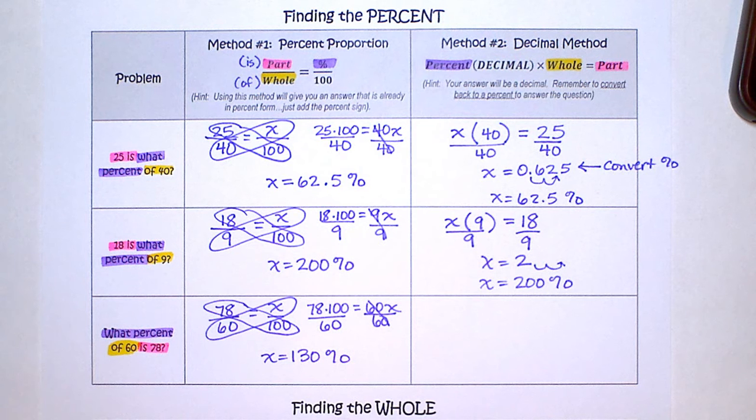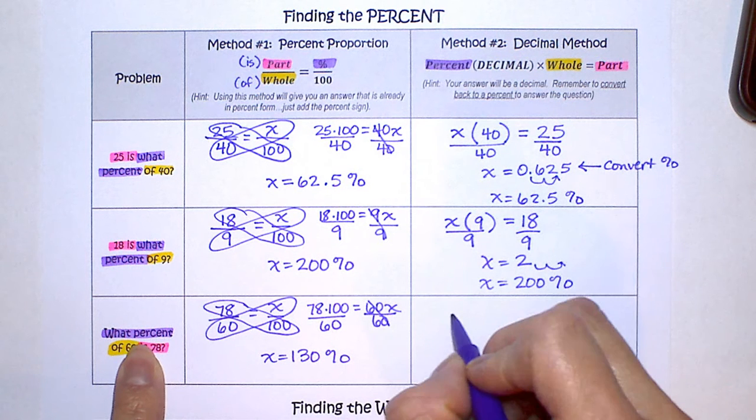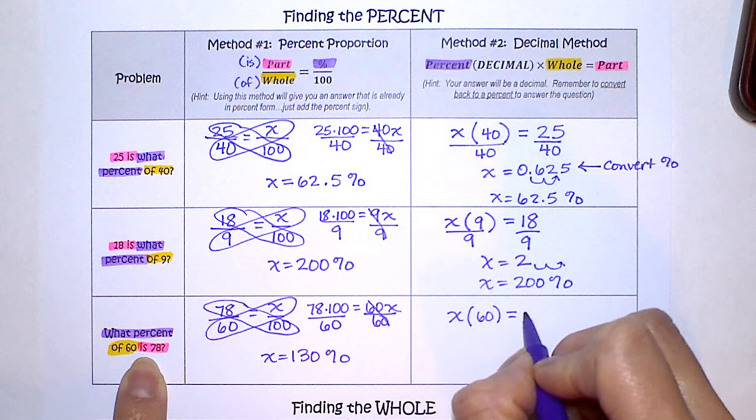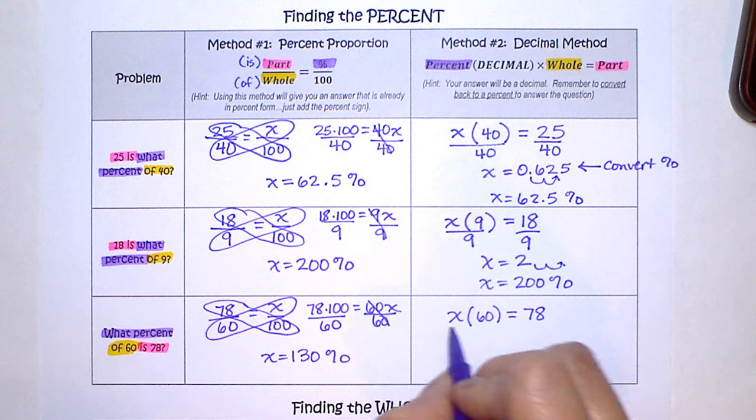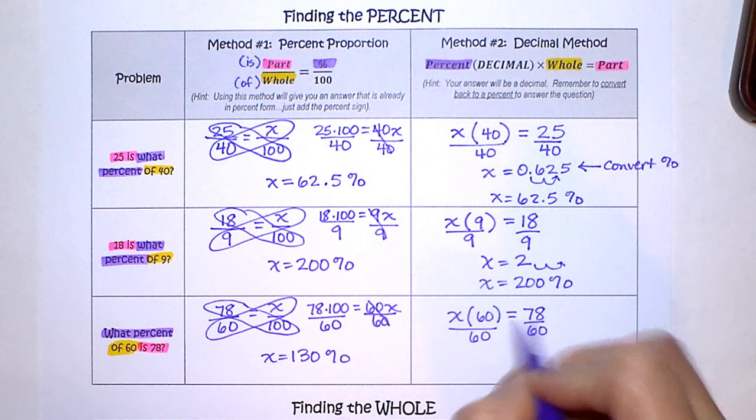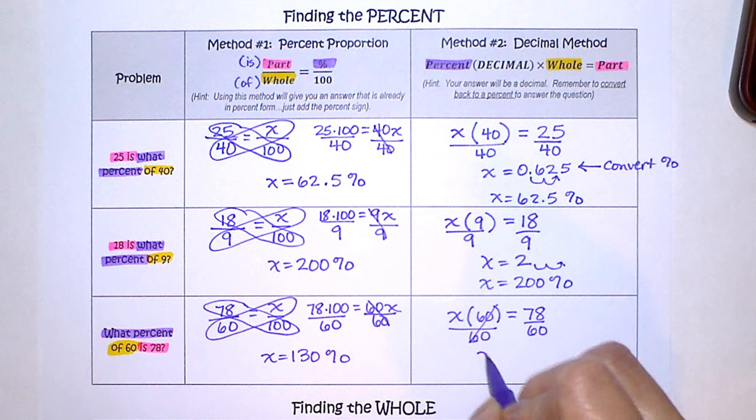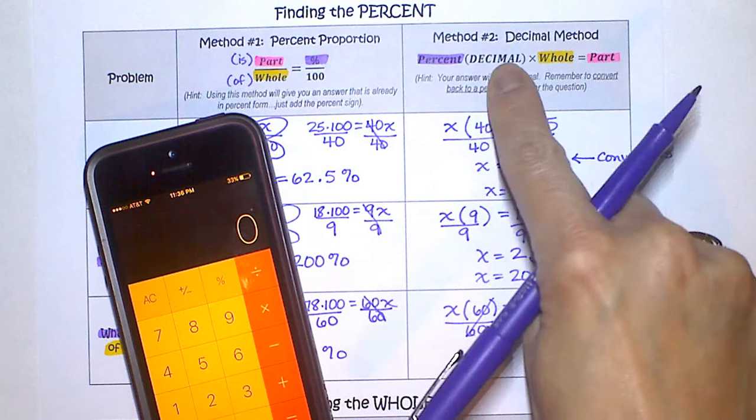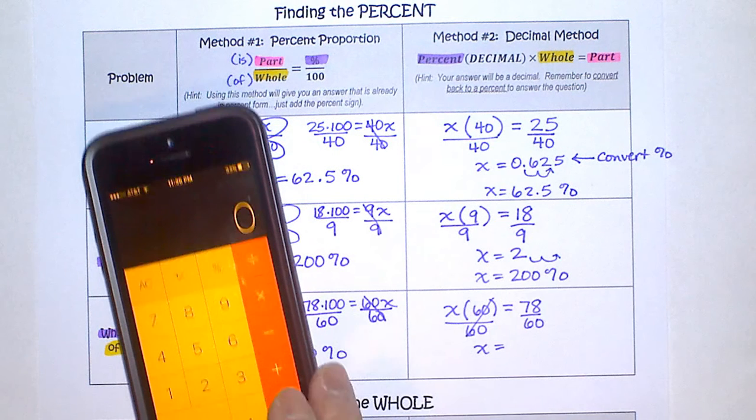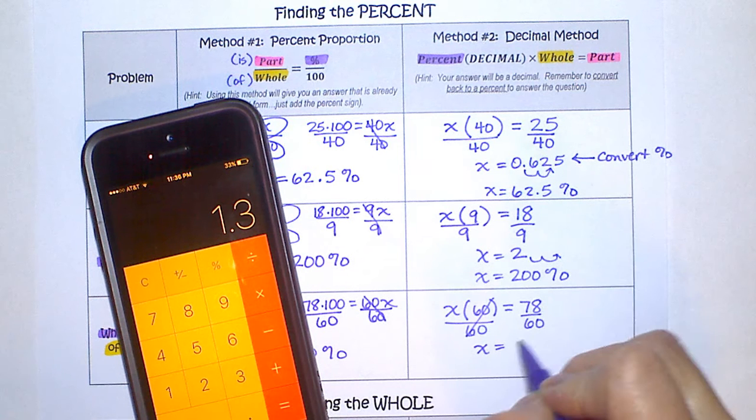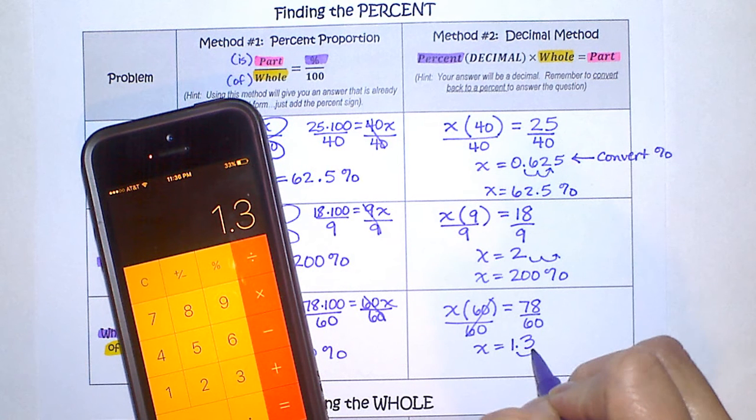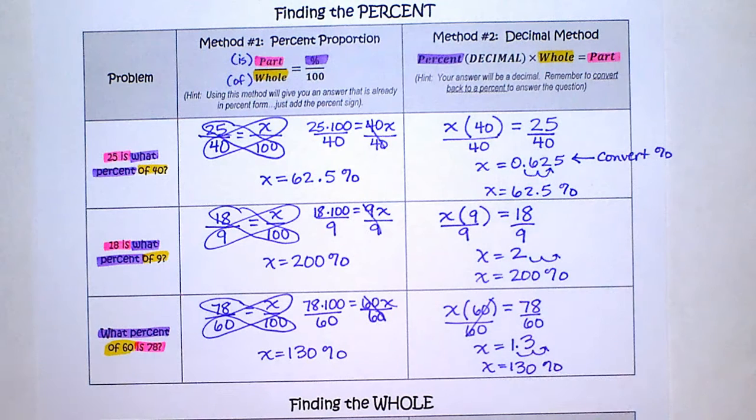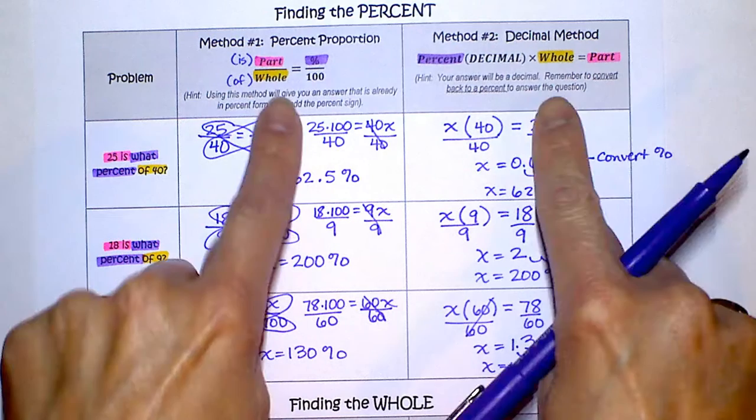And now let's try it with the decimal method. So our percent times our whole equals our part. And the opposite of multiplying by 60 is to divide by 60. Now be careful. Remember, this answer is going to be our decimal. We have to change it back to a percent. So 78 divided by 60 is 1.3. Move that over two places. So x is 130 percent. So we got the same answer using two different methods.